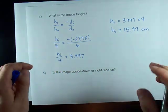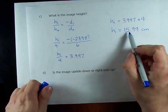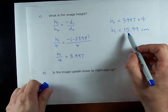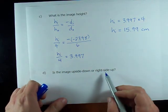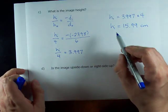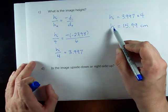H_I is 15.99 centimeters. Cool. Now, that is a positive image height. Is the image upside down or right side up? If the H_I, the height of the image, was negative, it would be upside down.